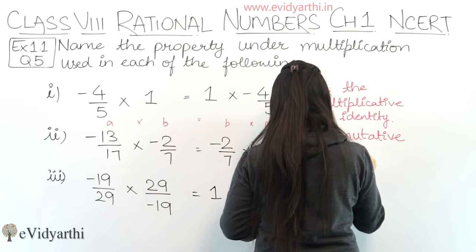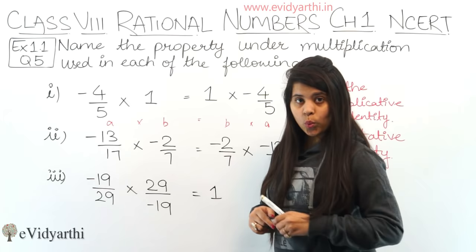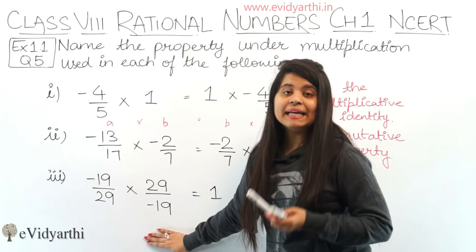Next we have minus 19 upon 29 into 29 upon minus 19 equals 1. Here, one number is the reciprocal of the other. When you multiply a number by its reciprocal, you get 1. So the property used here is the multiplicative inverse.